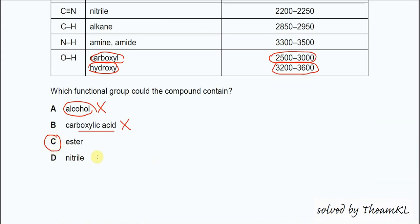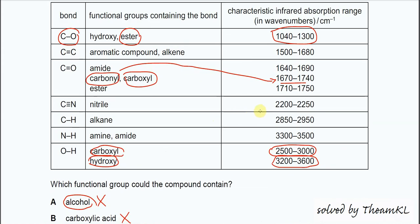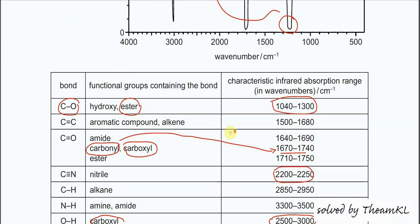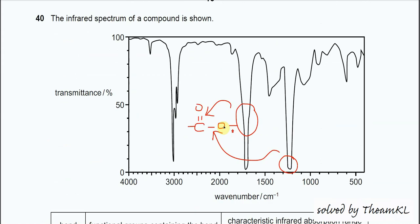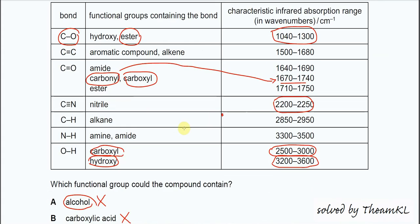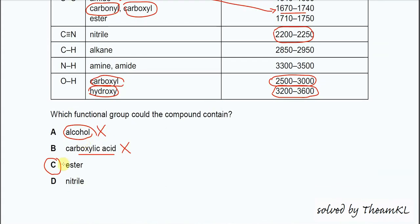Of course it's not nitrile. Nitrile absorbs around 2200, and around 2200 you should see a peak, but there is nothing there. So the answer is confirmed to be ester, C. That's all, thank you.